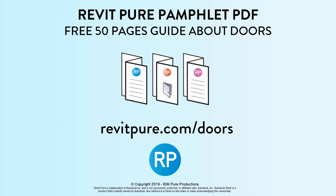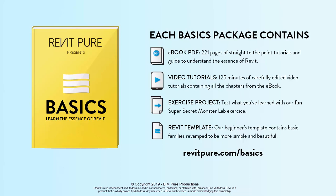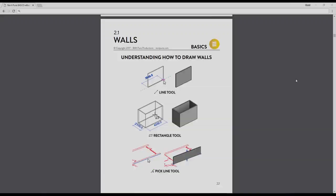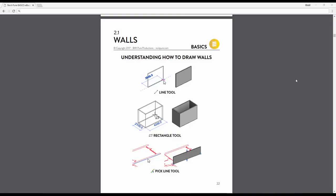If you enjoyed this tutorial, make sure to download the free 50-page PDF guide about doors at revitpure.com/doors. Also check out the RevitPure Basics package — it contains an ebook, a complete video tutorial series, an exercise project, and a basic Revit template. Thousands of users love the simplicity and efficiency of the ebook. Download the complete package at revitpure.com/basics.